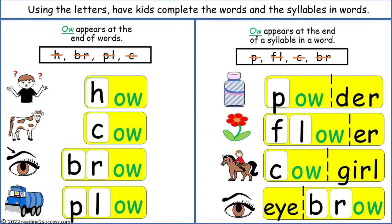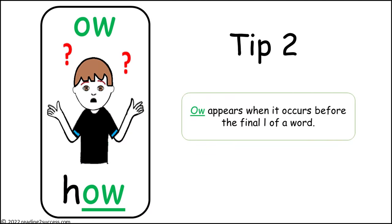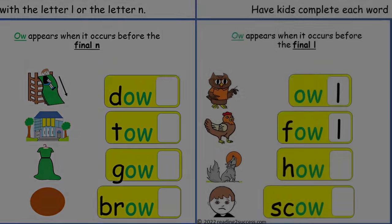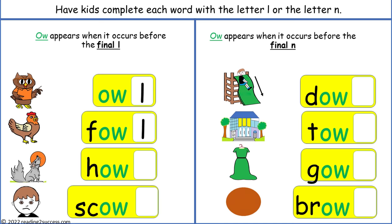This is the completed practice page for tip number one, parts one and two. Now have kids practice tip number two: O-W appears when it occurs before the final L of a word. Have kids practice by putting the final L in each word in the first column. The first word is 'owl,' the second is 'foul,' the third is 'howl,' and the last word in this column is 'scowl.'